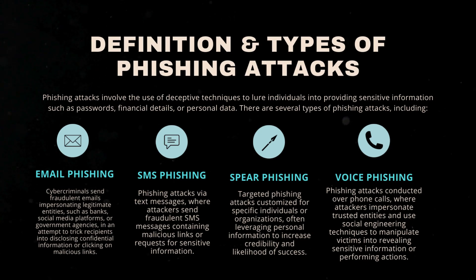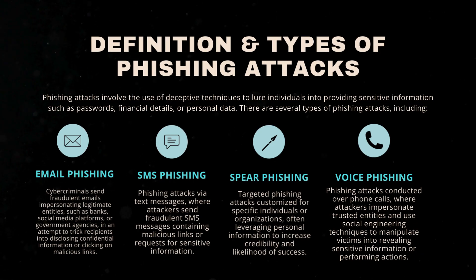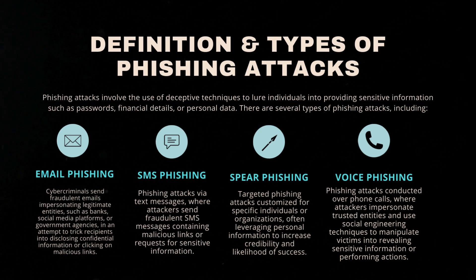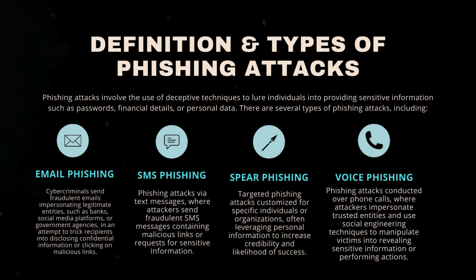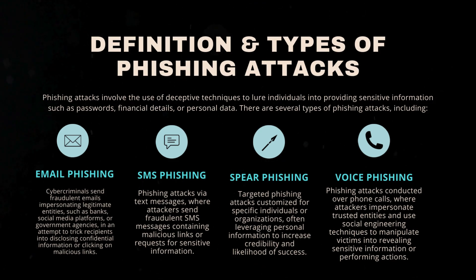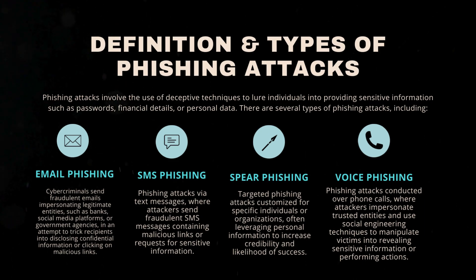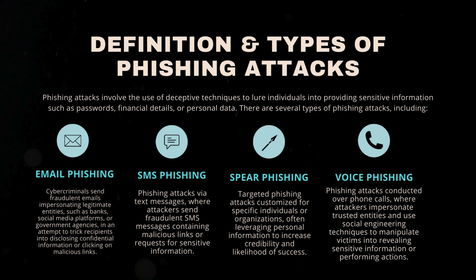SMS phishing, also known as smishing, involves attacks via text messages where attackers send fraudulent SMS messages containing malicious links or requests for sensitive information. Spear phishing refers to targeted phishing attacks customized for specific individuals or organizations, often leveraging personal information to increase credibility and likelihood of success. Voice phishing, also known as vishing, is conducted over phone calls where attackers impersonate trusted entities and use social engineering techniques to manipulate victims into revealing sensitive information or performing actions.